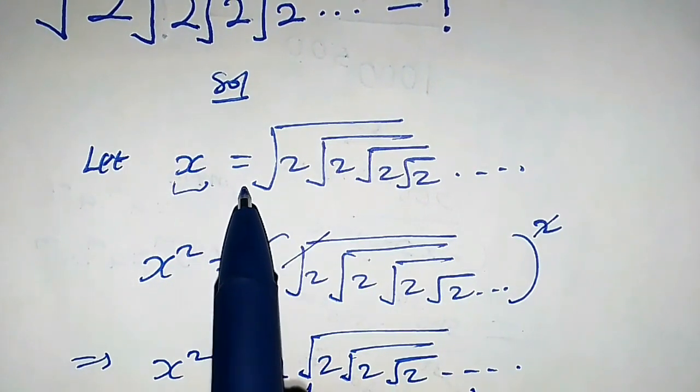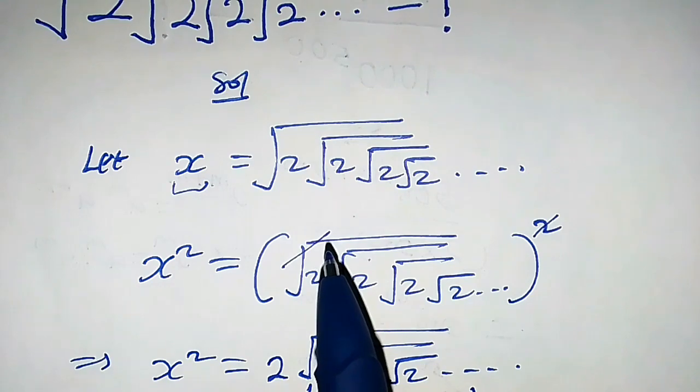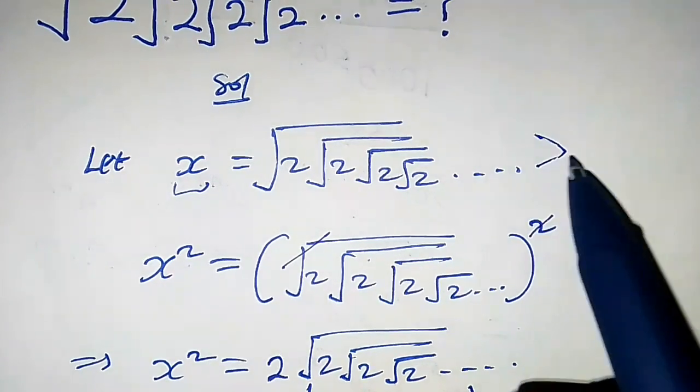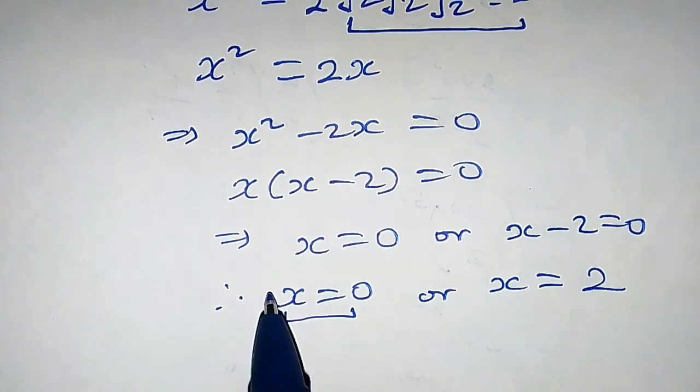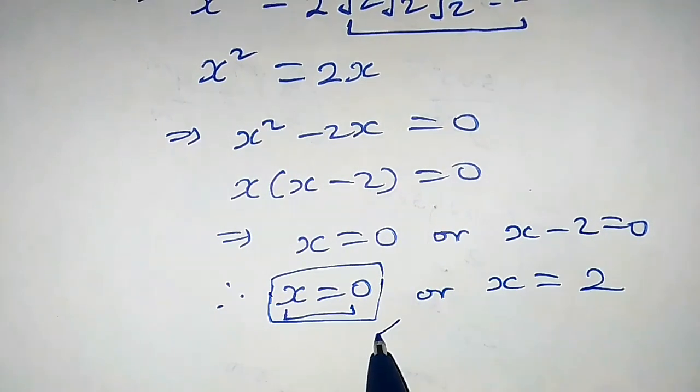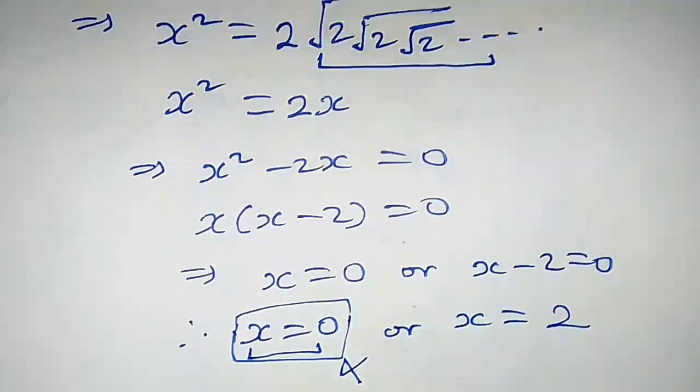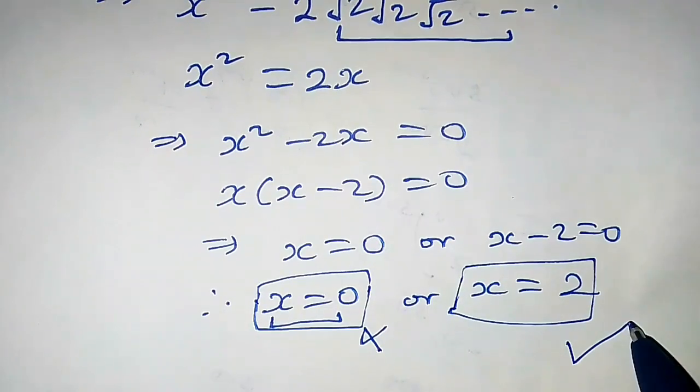We let x to be equal to square root of 2, square root of 2, which means that this guy must be greater than 0. That means that x being equal to 0 violates our condition, so this is not part of the solution. x equals 2 is the required solution.